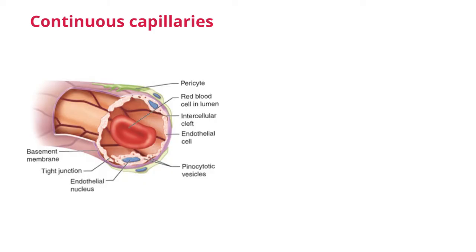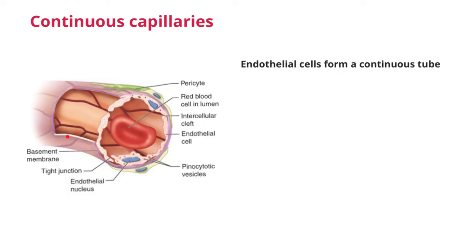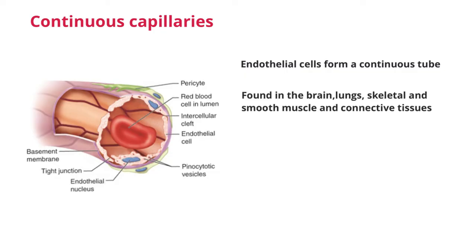In continuous capillaries, the endothelial cells form a continuous tube and the basement membrane is also completely intact. These types of capillaries are found in the brain, lungs, skeletal and smooth muscle, and connective tissues.